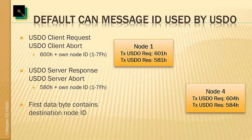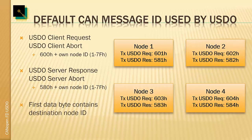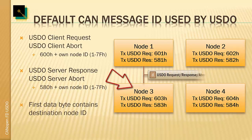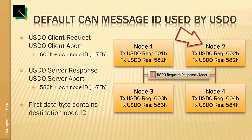On the receiving side, any receiver needs to receive all USDO client requests and responses on the system and evaluate the first data byte to see if it is the device currently addressed as destination. As an example, if node number three wants to transmit a request to node number two, it uses CAN ID 0x603, puts the number two in the destination in the first data byte, and transmits the message. Node two sees there's a USDO request with a two in the destination field, prepares the response, and uses CAN ID 0x582 to transmit the response with destination filled in as three.